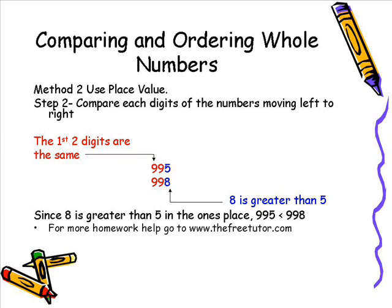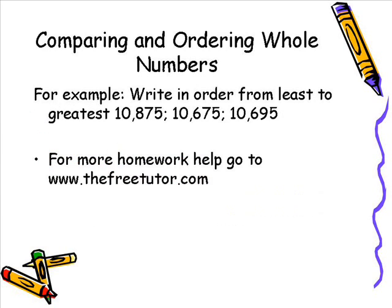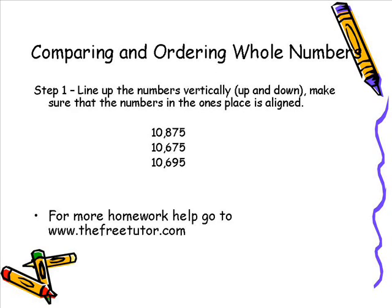Ok now we can use this exact same method for ordering whole numbers. Say for example we want to write in order from least to greatest 10,875, 10,675 and 10,695. The steps are exactly the same for ordering whole numbers as it was for comparing whole numbers using place value. Step number one is we want to line the numbers up vertically and make sure that the ones digit is aligned correctly as you can see in this picture.